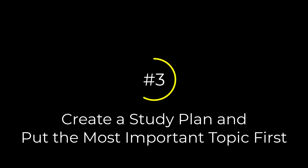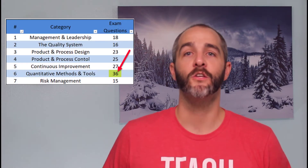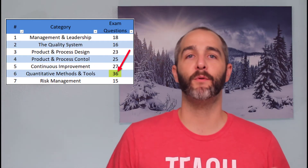Once you've read the body of knowledge and you understand what's going to be on the exam, and you've taken a practice exam to uncover your strengths and weaknesses, it's time to use that information in tip number three to create a study plan and put the most important topic first. And what is the most important topic? It's statistics. In all my time helping people pass the CQE exam, the number one topic people don't know early in their journey is statistics.